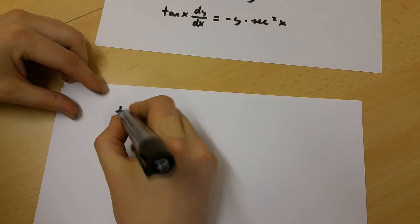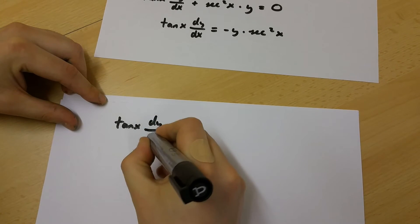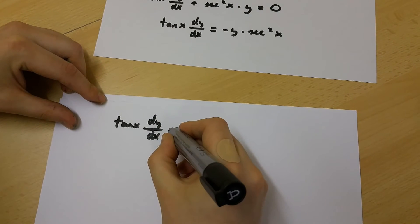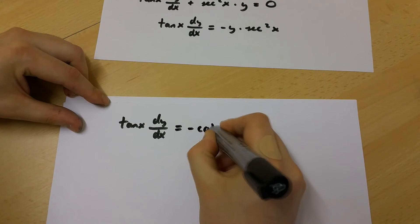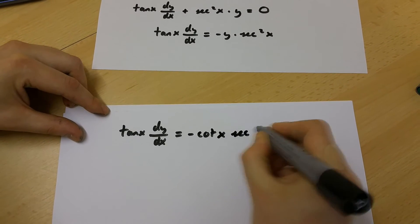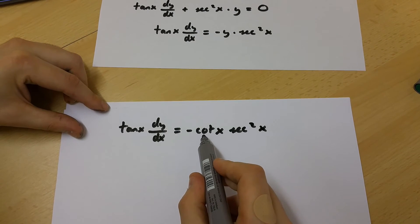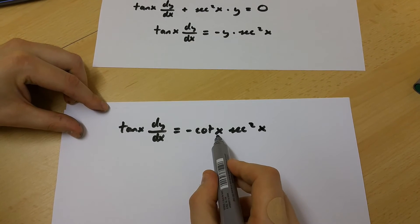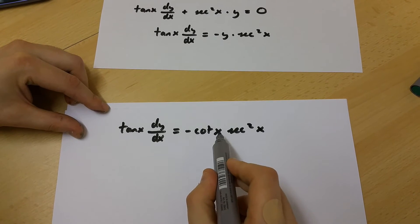From here we're going to get tan x multiplied by dy over dx is equal to minus cot x multiplied by sec x squared. Cot x appears here because y is equal to cot x.